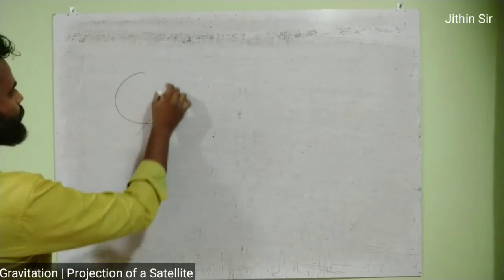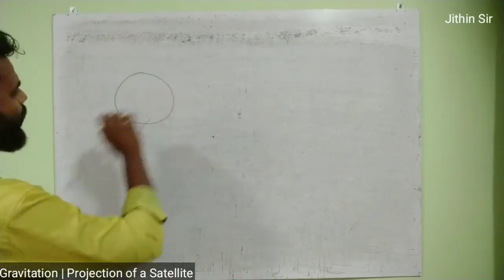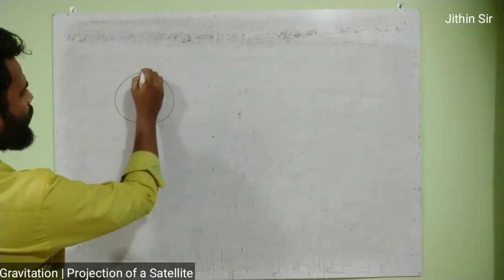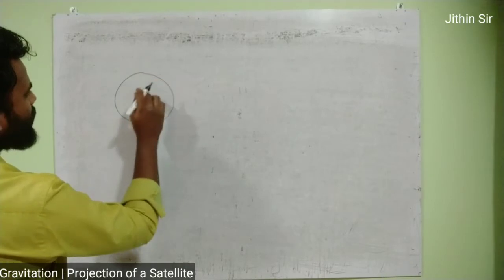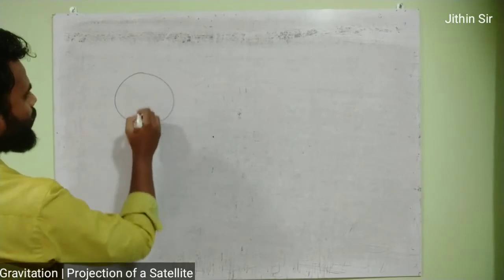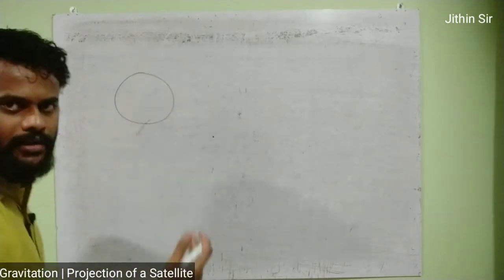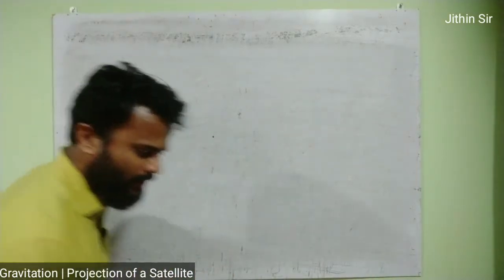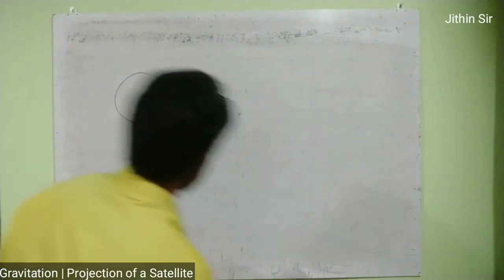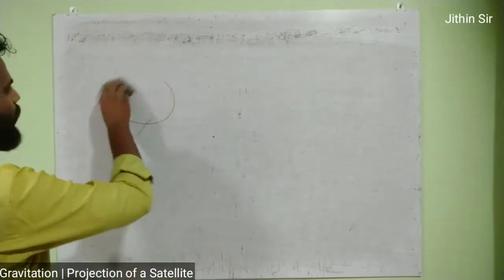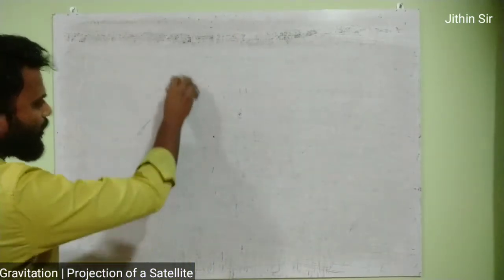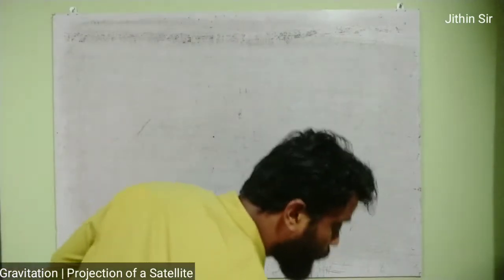Think of this as our earth. What we basically do is launch our satellite. We make the earth a little smaller in the diagram because the satellite needs to orbit around it.